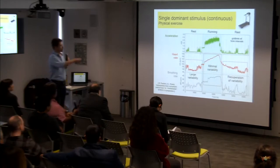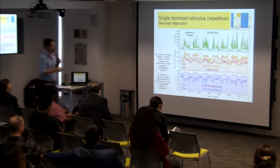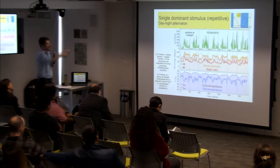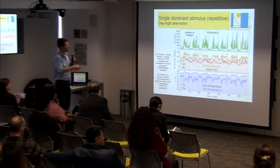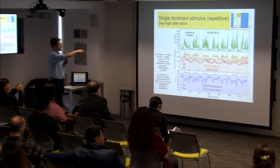So this is one single stimulus which is continuous. What happens if we have a single dominant stimulus which is repetitive? One of the best examples is what happens with our body during the day-night alternation.